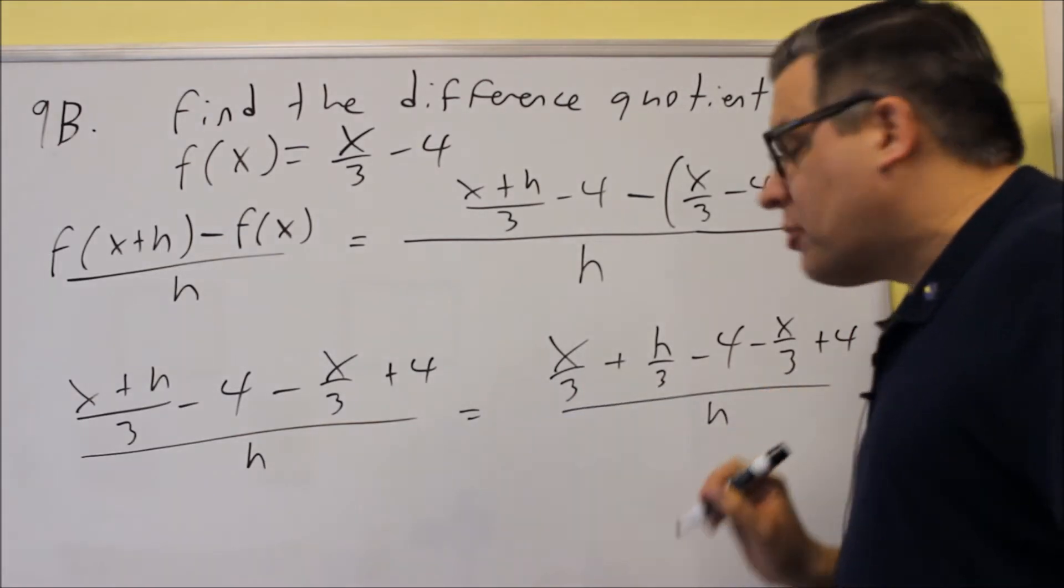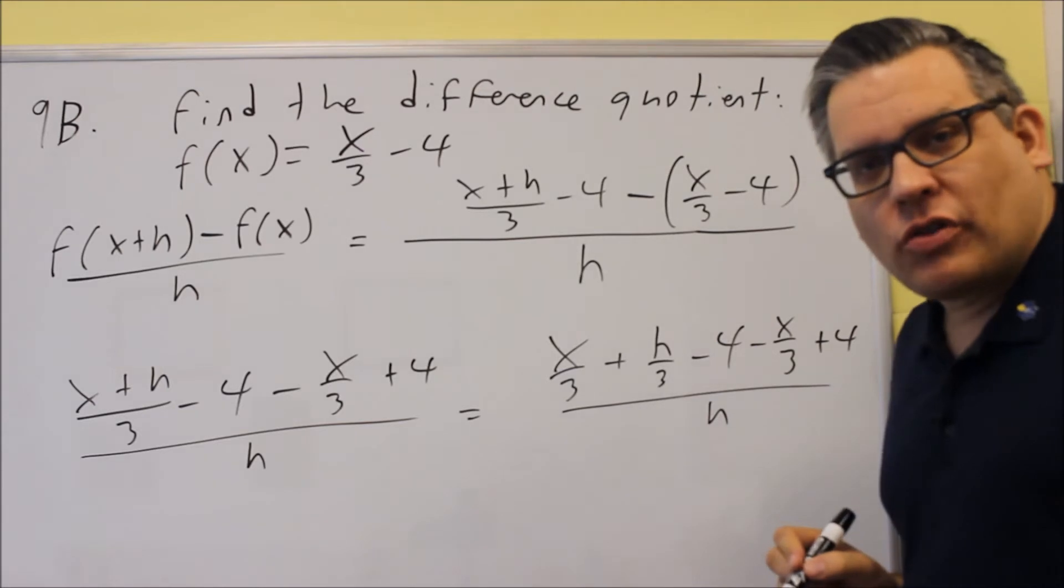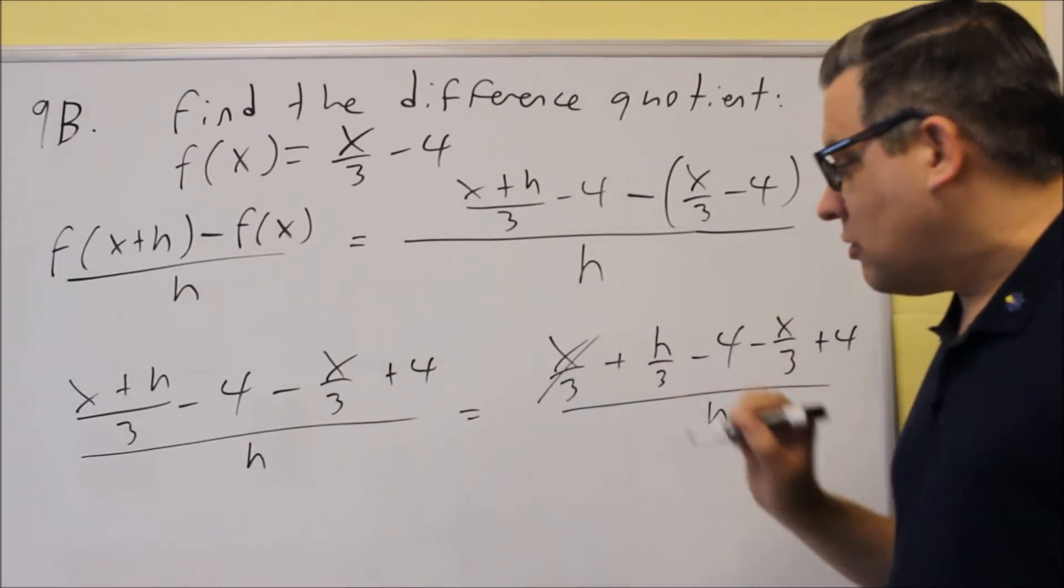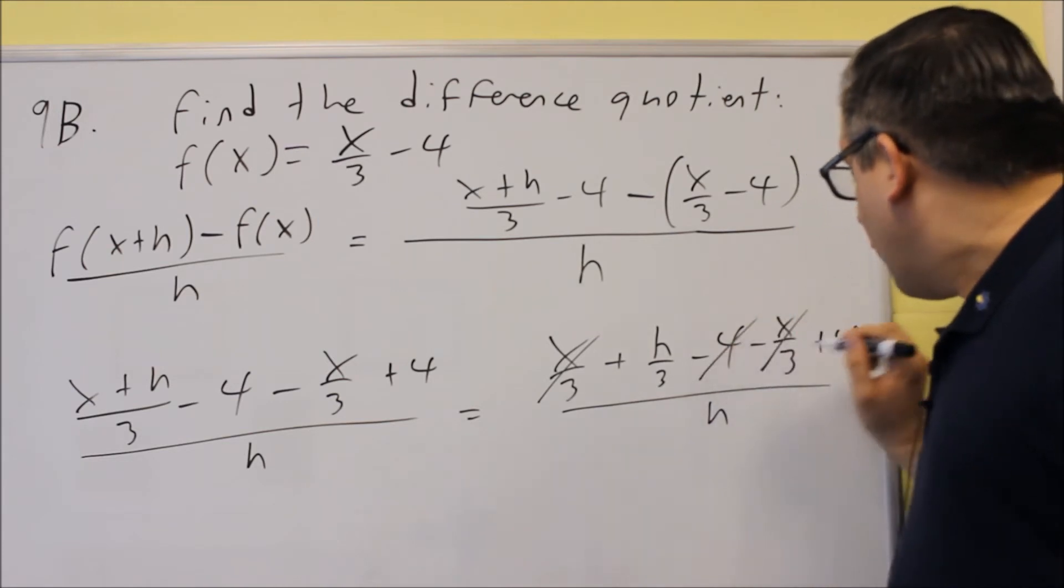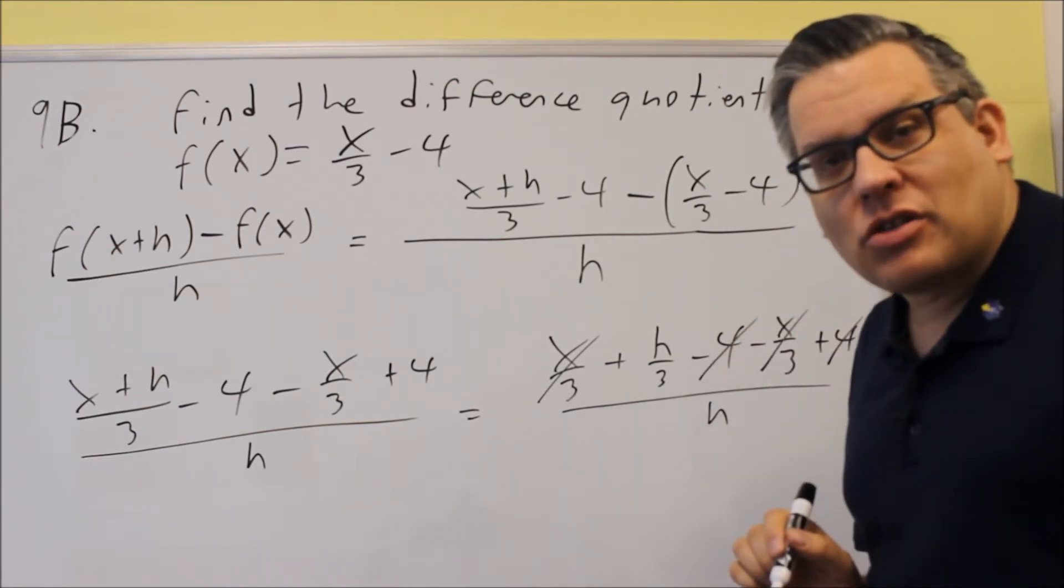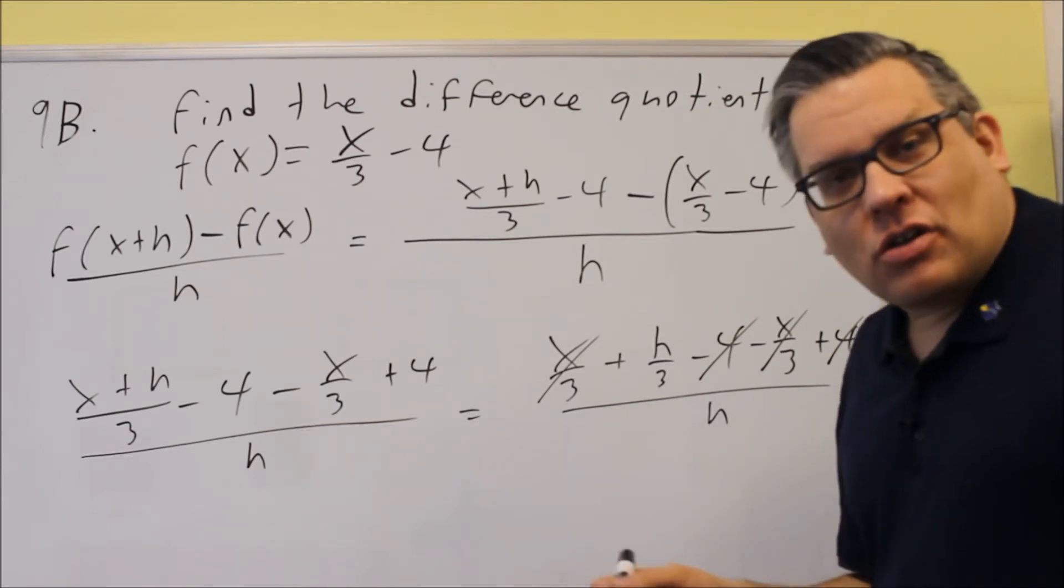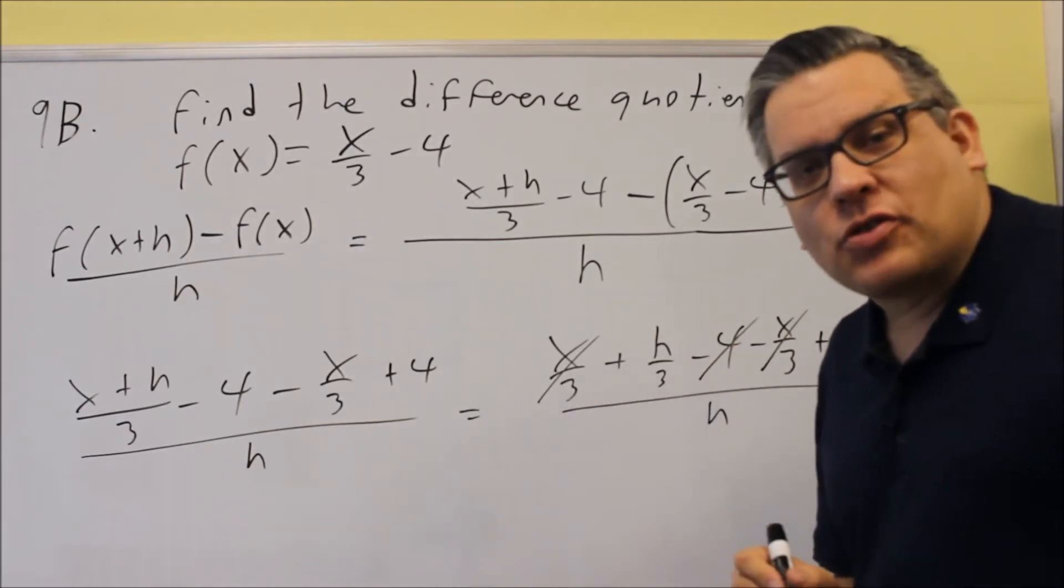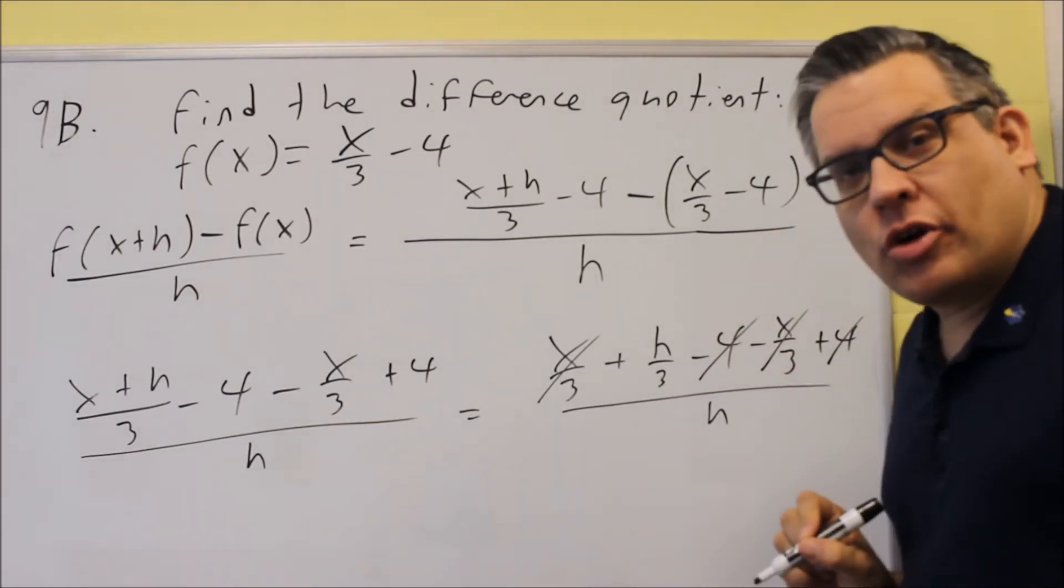So, I did that purposely because this way you can cancel out some more things. So, the x over 3 and negative x over 3, that cancels out. Negative 4 and positive 4, that's going to cancel out as well. Notice that what we have left has an h in it. So, again, every time you do these kind of problems for difference quotient, you're always going to end up with an h that you can cancel out down below.